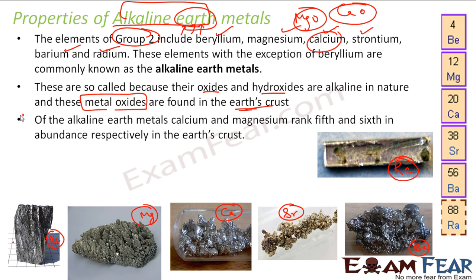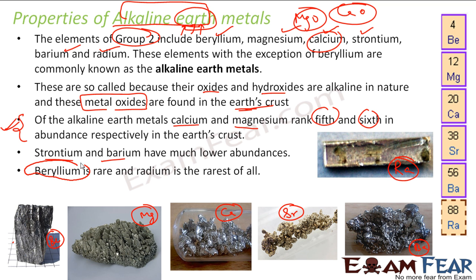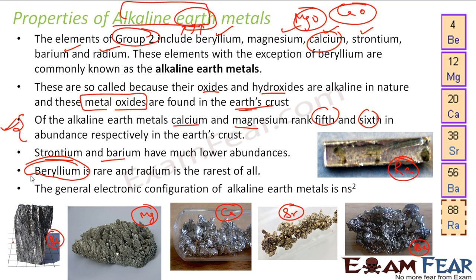Regarding abundance, we will discuss this in the next few slides. Calcium and magnesium are the most easily found metals in this group — they are fifth and sixth in abundance in the earth's crust. The other ones — strontium, barium — are a little rare. Beryllium is very, very rare — it is the rarest of all and very difficult to find. The electronic configuration for alkaline earth metals is NS².